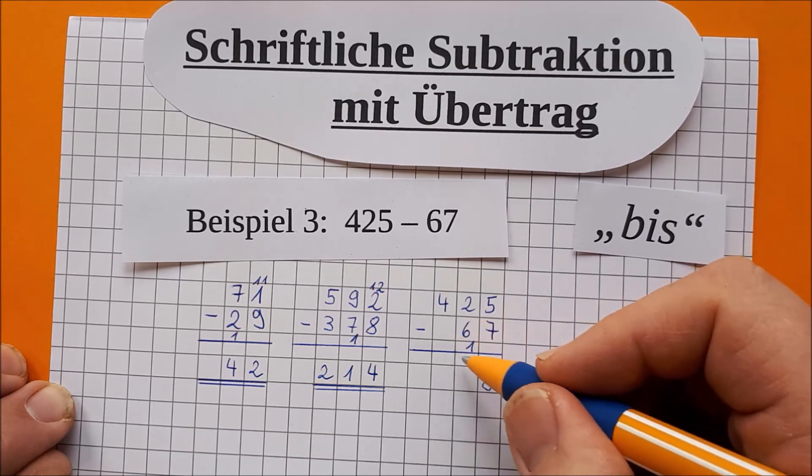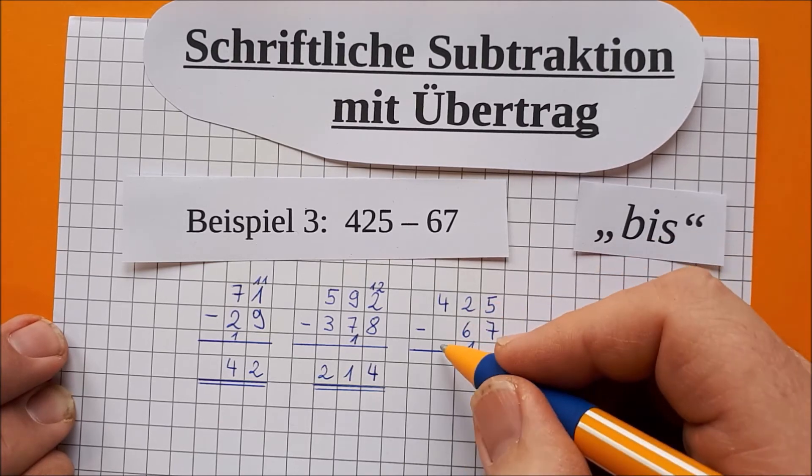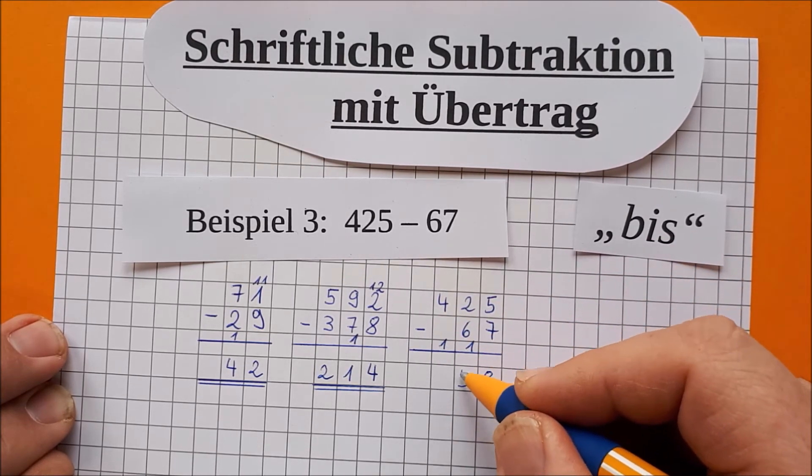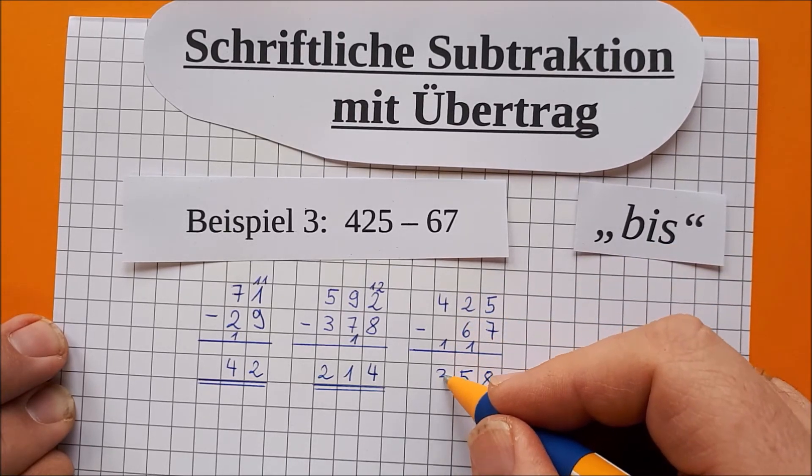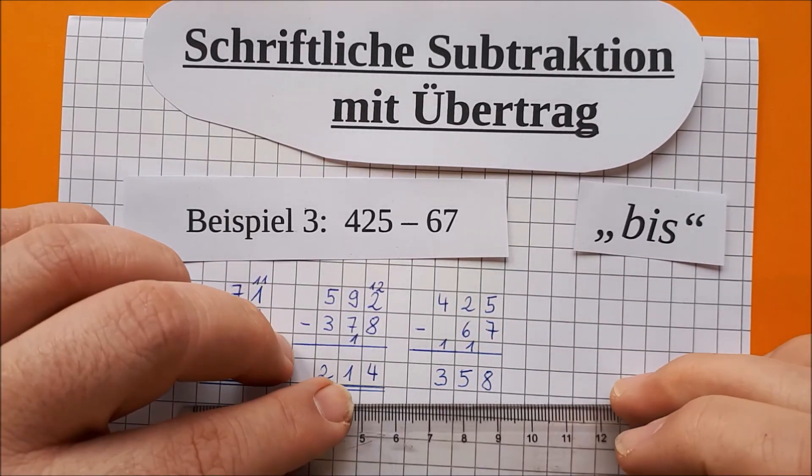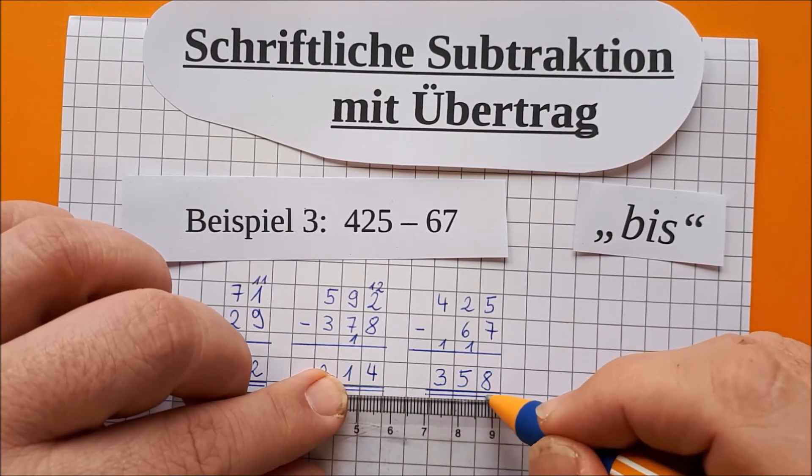So, weiter geht's. Das sind jetzt 7. 7 bis 2 geht nicht. Also 7 bis 12 sind 5. Und 1 bis 4 ist das Gleiche wie 3. Doppelt unterstreichen. Und dann haben wir diese Aufgabe auch schon wieder geschafft.